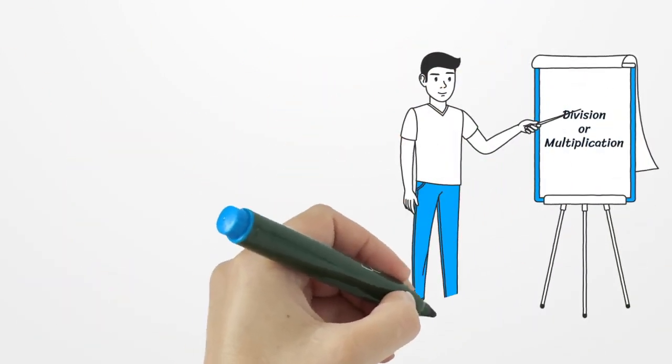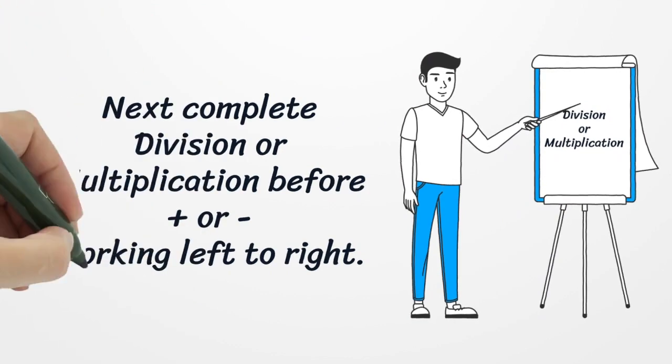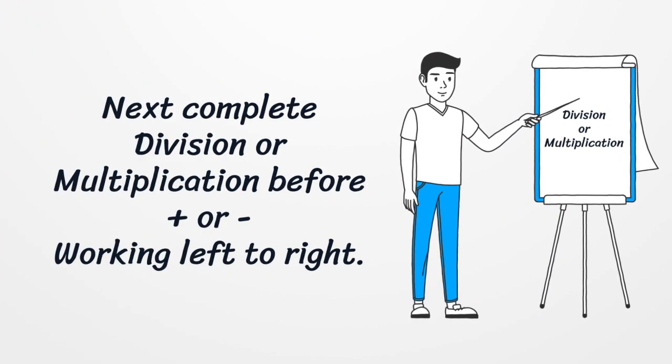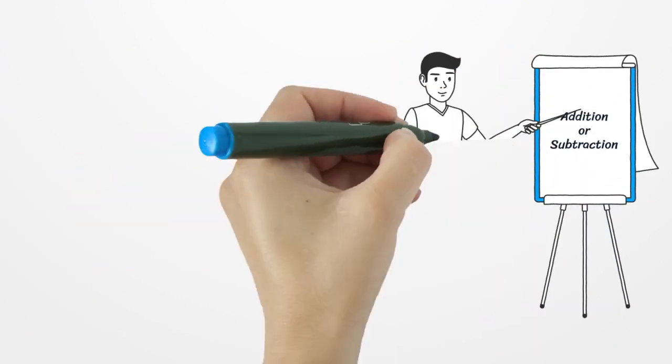Following this is division or multiplication, whichever comes in order left to right. Both of these operations have the same value. After this addition and subtraction, again still working left to right, whichever comes first.